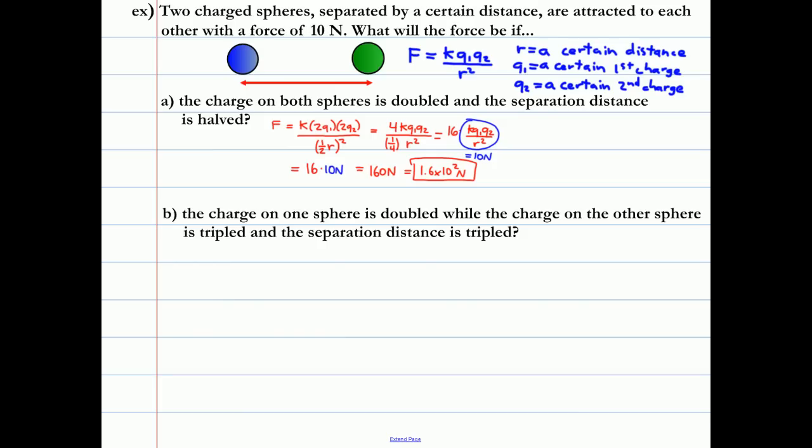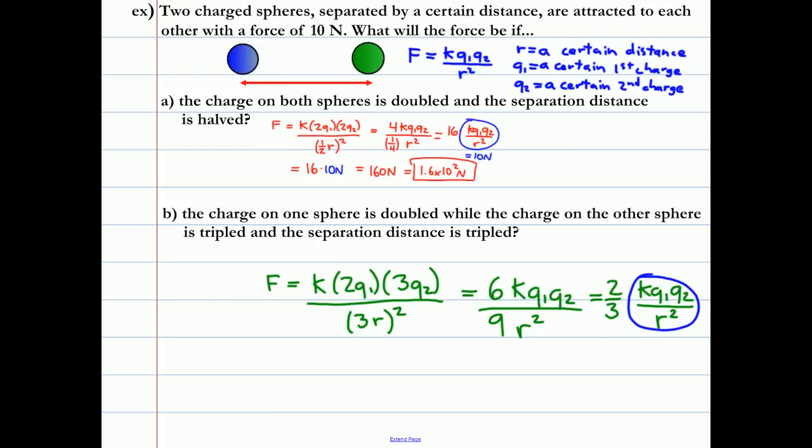Next situation. The charge on one sphere is doubled, the charge on the other sphere is tripled, the separation distance is tripled. So the new force is K times twice the first charge times 3 times the second charge all over 3 times the separation distance initial, squared. That gives us 6KQ1Q2 over 9R squared. 6 over 9 reduces to 2 over 3, KQ1Q2 over R squared. That looks like two-thirds times the original force, which is 10 newtons. So two-thirds times 10 newtons gives us 6.7 newtons.